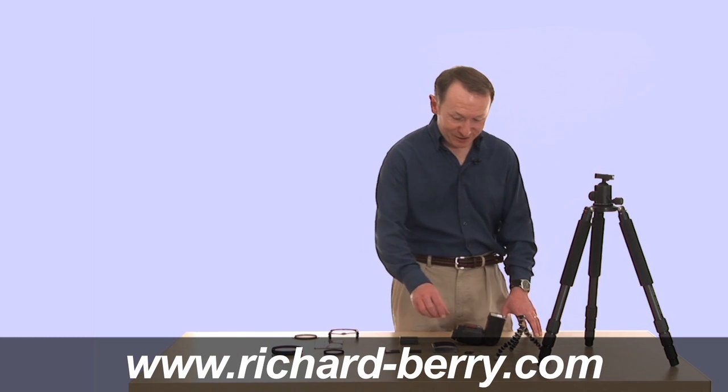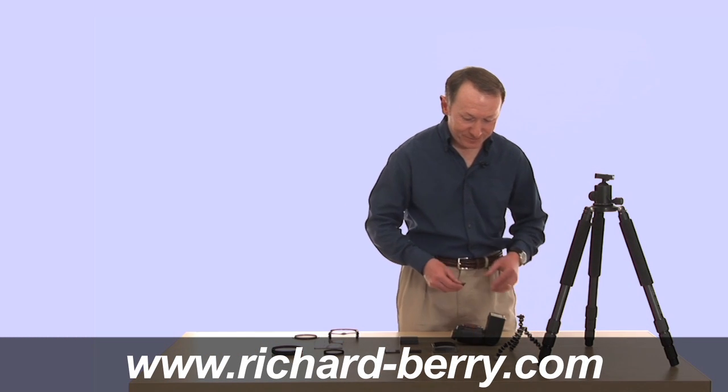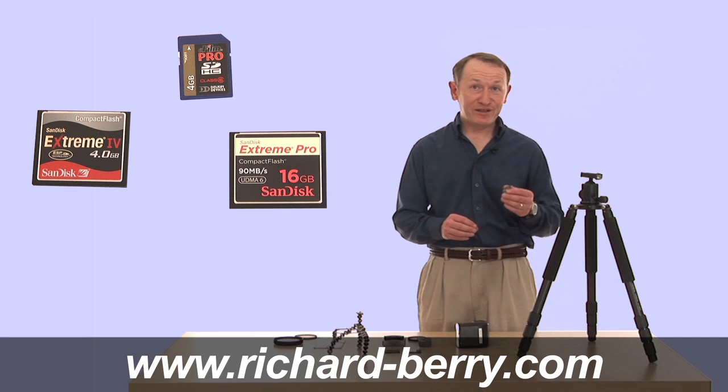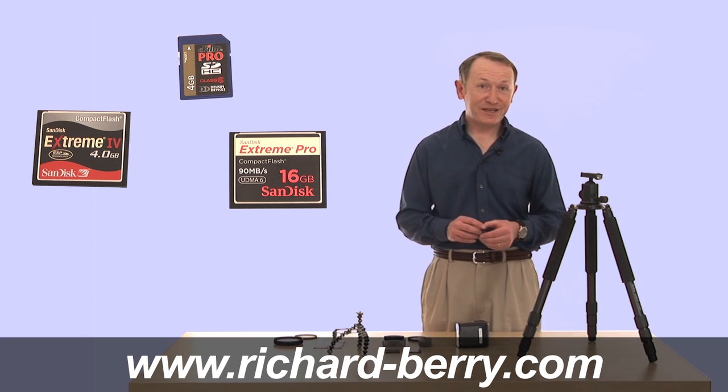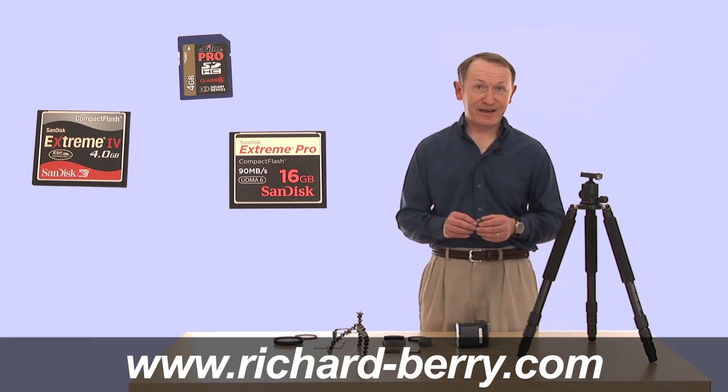There are two important accessories that we need when we buy a camera. The first of all is a memory card. With modern memory cards, they can be a very large size like this 4GB card. With a regular compact camera and a JPEG file, you may get thousands of photographs on one card.